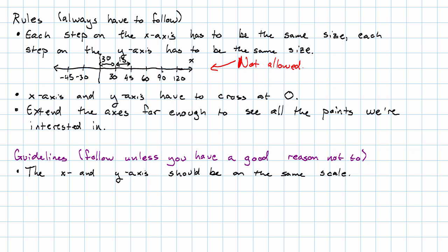When do we have a good reason not to do that? We might not want to do that if the numbers are on very different scales. For example, if we're interested in the points (0, 6000) and (2, 4000), we might want to count by thousands on the y-axis, but by ones on the x-axis.